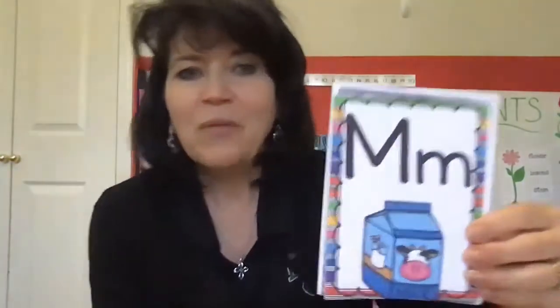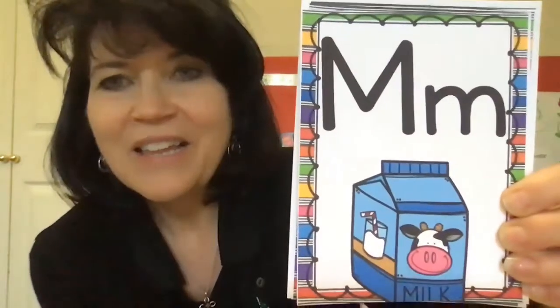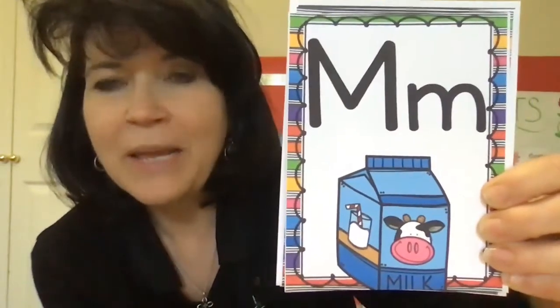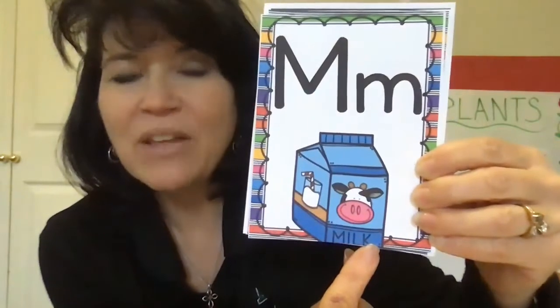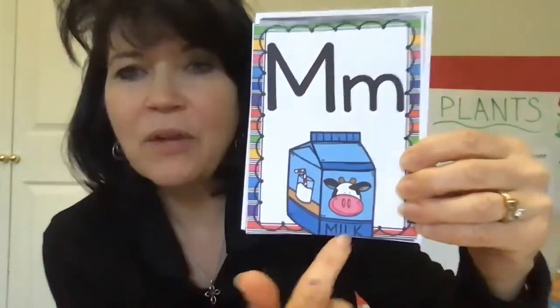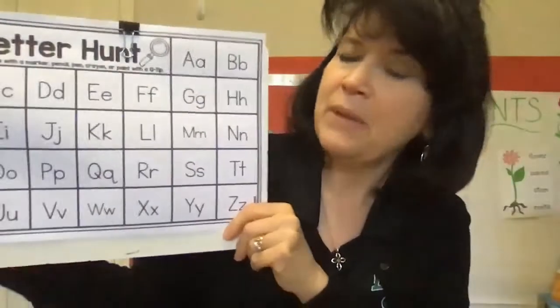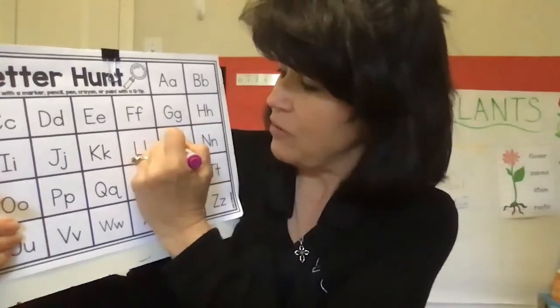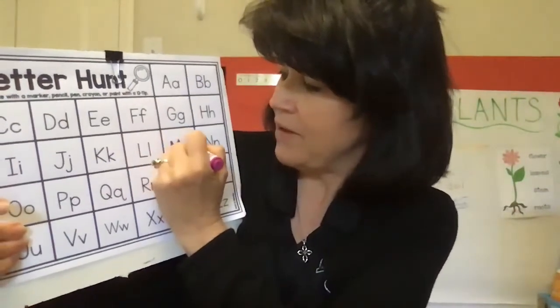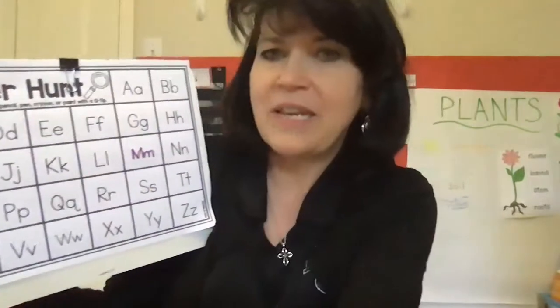Okay, are you ready? Here's our first one. What letter is that? That's right, that's the letter M. M says 'm' as in milk. So look and see on your paper — can you find the M? I'm going to use this color and trace my uppercase and my lowercase M.